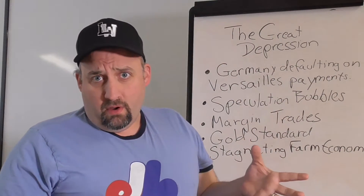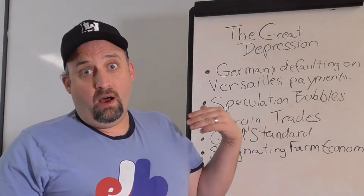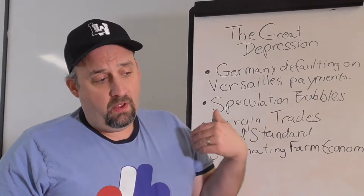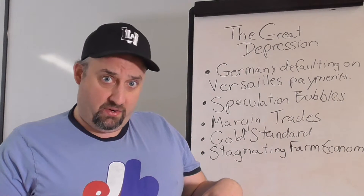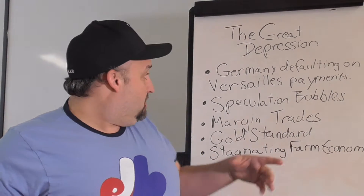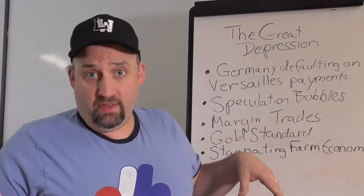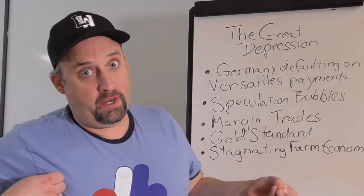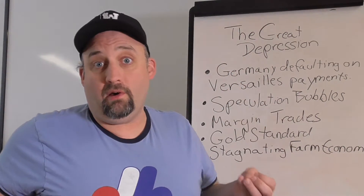The industrial world economy of the 20th century, as today, is an interconnected economy — everything affects everything else. When we look at the Great Depression, we're seeing native factors to the United States, things like speculation bubbles and margin trading, mixing with international factors — non-native factors such as Germany defaulting on its loans. So let's go ahead and get started.